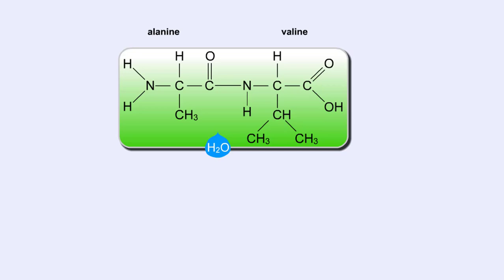This kind of bond is repeated within a protein thousands of times using many different amino acids. In a living cell, these bonds are created in a set order for each protein on a cellular structure called a ribosome, but that will be discussed in detail in a later animation.